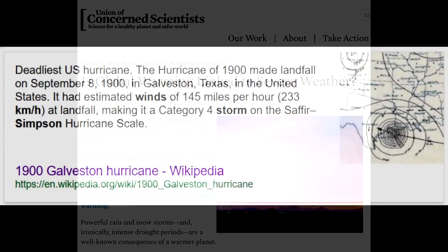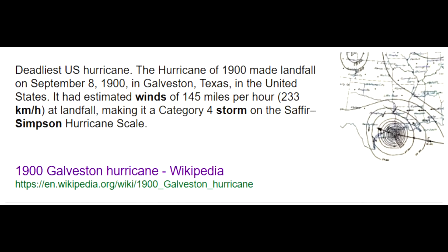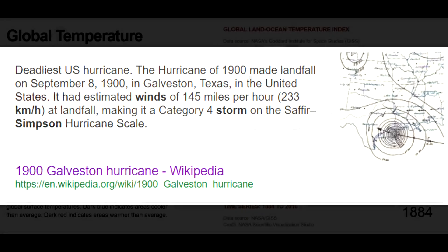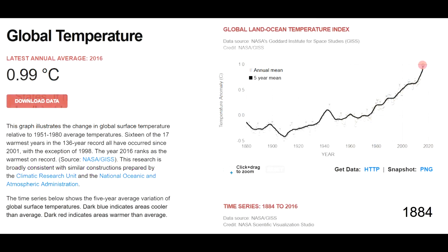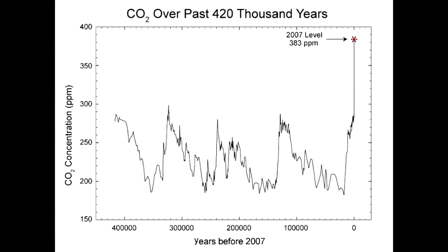We know that hurricanes and tornadoes have been around for hundreds of years, and almost certainly thousands and millions of years. So there's no need for us to attribute what we see today as being down to global warming. But what we can do is compare historical temperatures and historical levels of greenhouse gases to the recent temperatures and current levels of greenhouse gases in the atmosphere, while noting the trends.